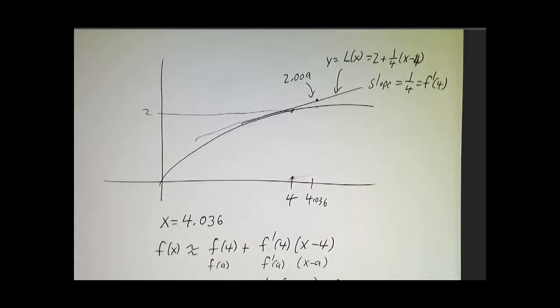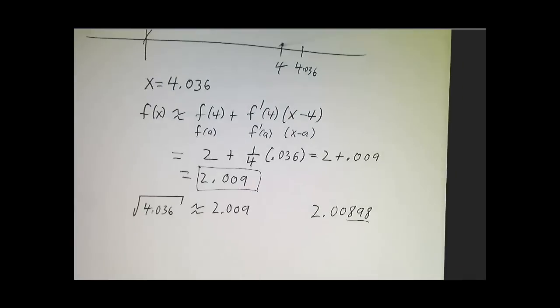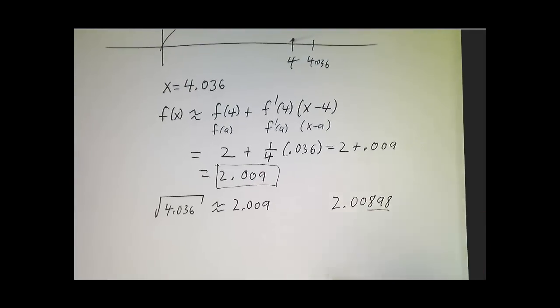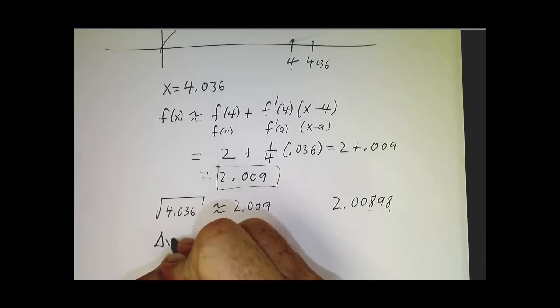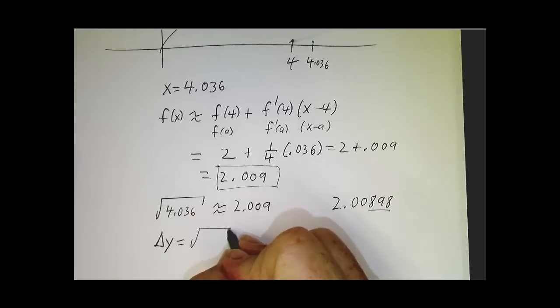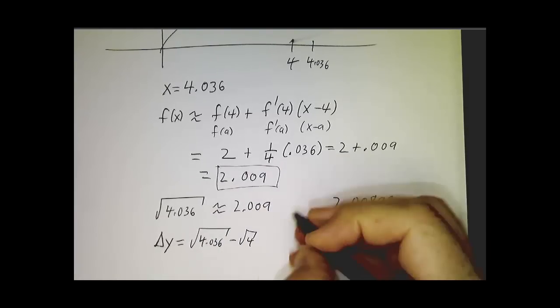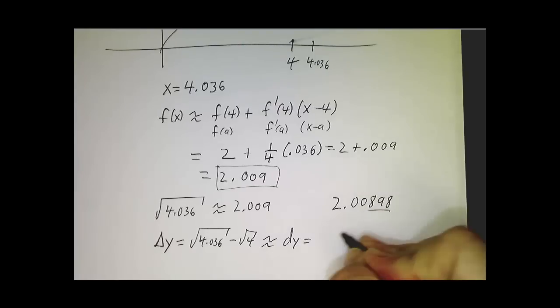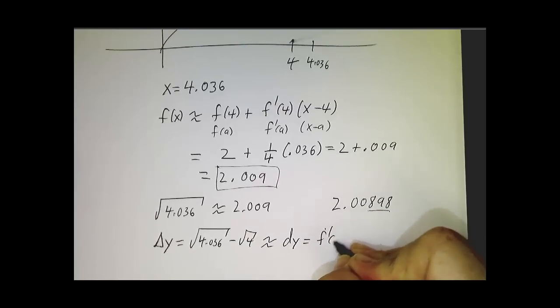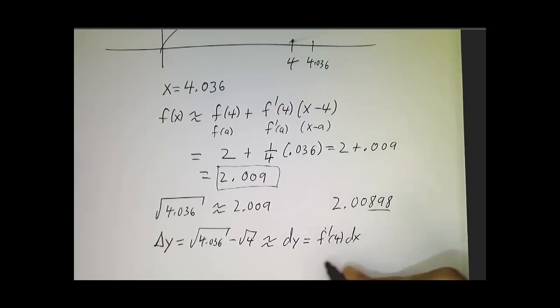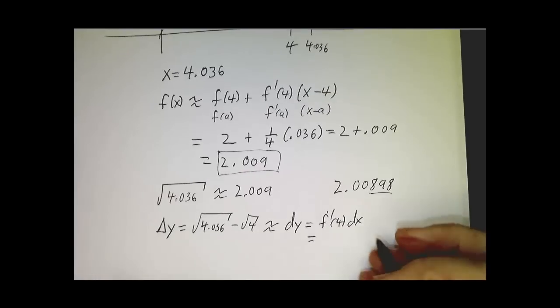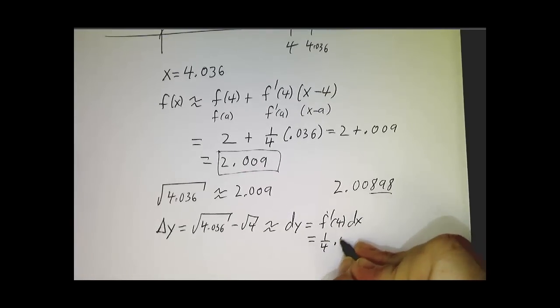If we were to describe the whole thing in terms of differentials, we would say that delta y was the square root of 4.036 minus the square root of 4, and this was approximately dy, which was f prime dx, which is one-quarter of 0.036, which is 0.09.